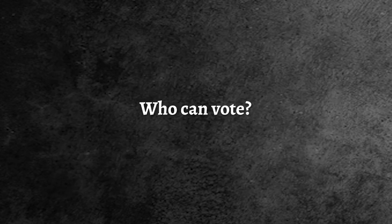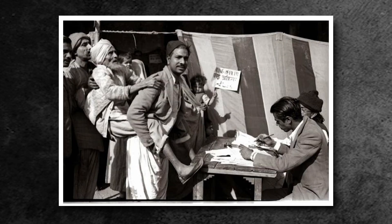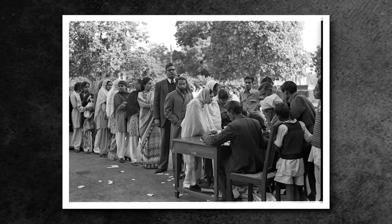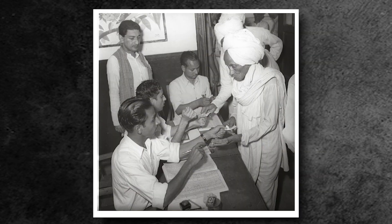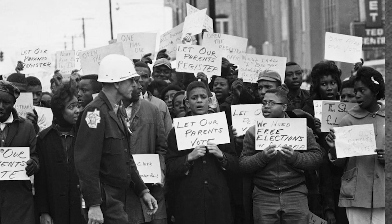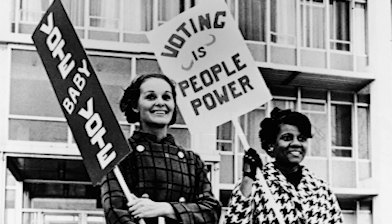These values also formed the foundation for discussions and decisions on different subjects. For example, on the question of who can vote — while debating voting qualifications, a discussion was held on whether only educated people should be given the right to vote. This was opposed on the principle of equality, and finally all citizens, irrespective of educational qualification, caste, religion, or gender, got their right to vote. It is worth noting that in America, Black people got their right to vote 80 years, and women 133 years, after the US Constitution came into being.